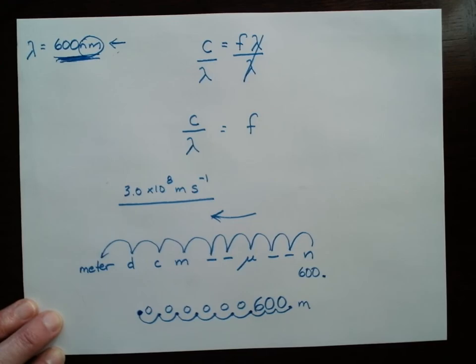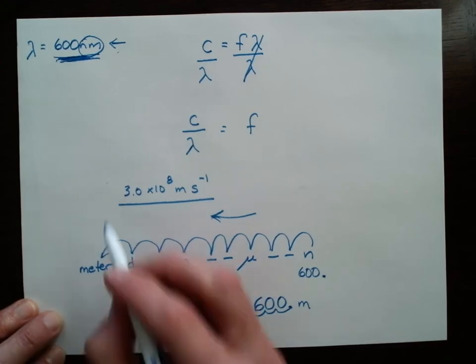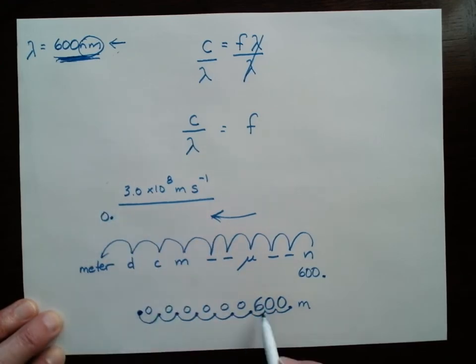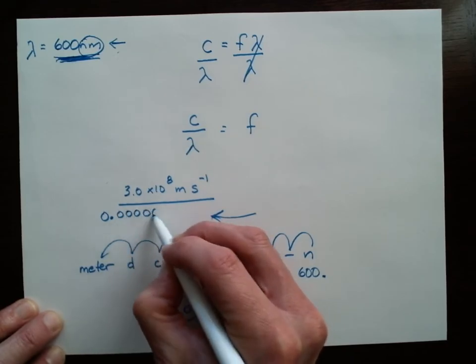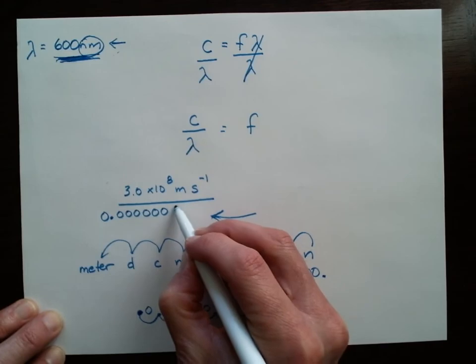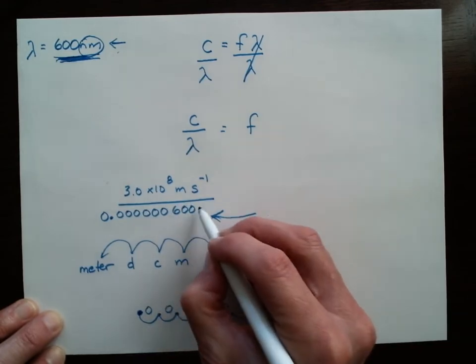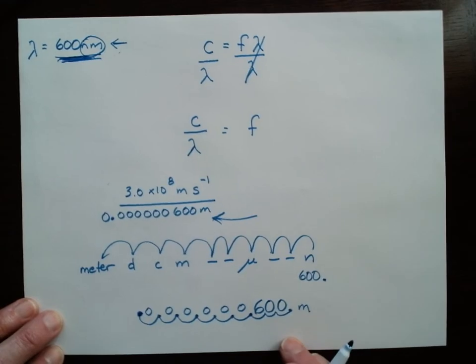That's what's going to go on the denominator here. Okay, so it's 0 point and then 6 zeros. 1, 2, 3, 4, 5, 6, and then 600 meters.